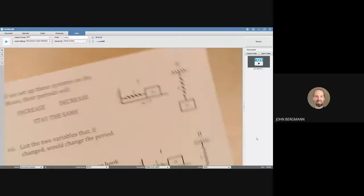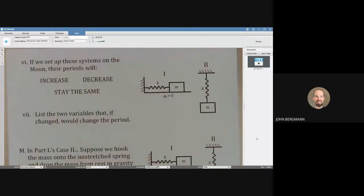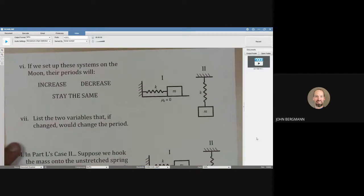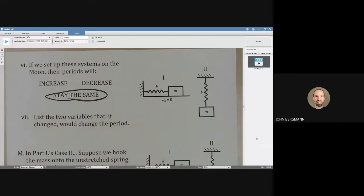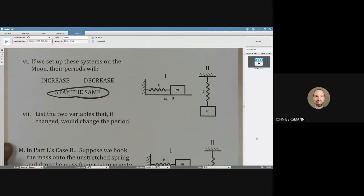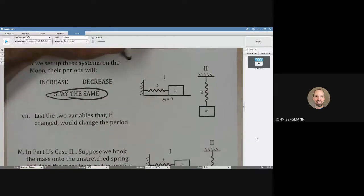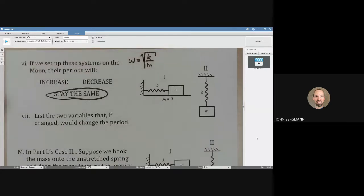What if we set up these systems on the moon? If we set these systems up on the moon, they'll stay the same. Because the period is related to the angular frequency. And if we take these systems to the moon, the spring constant is the same, the mass is the same, therefore the periods will be no different on the moon compared to on the earth.